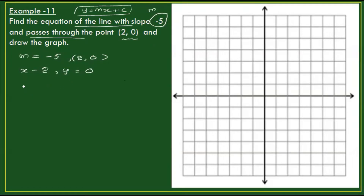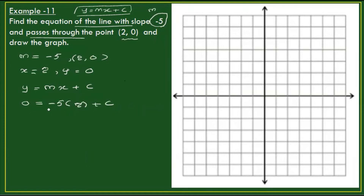Since y equals mx plus c, substituting y equals 0, m equals minus 5, and x equals 2, we get: 0 equals minus 5 times 2 plus c.